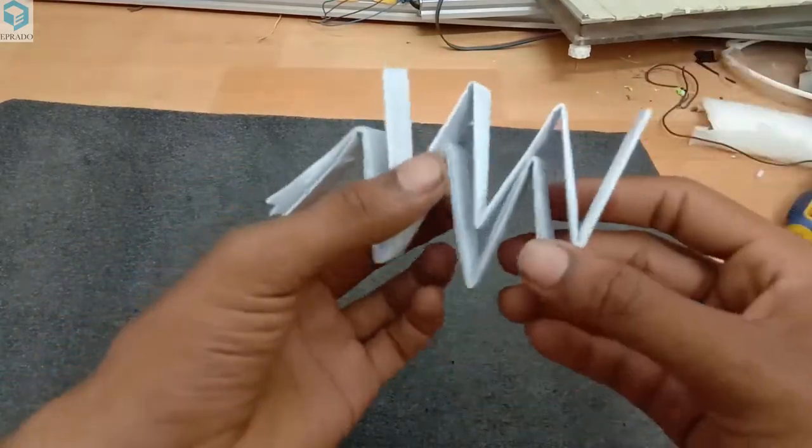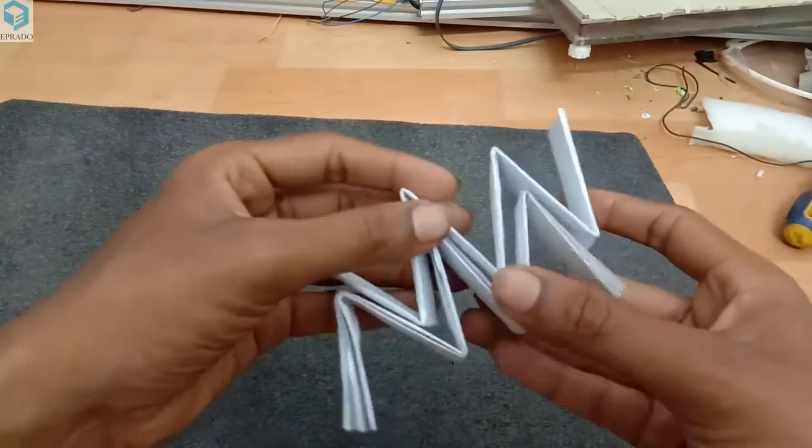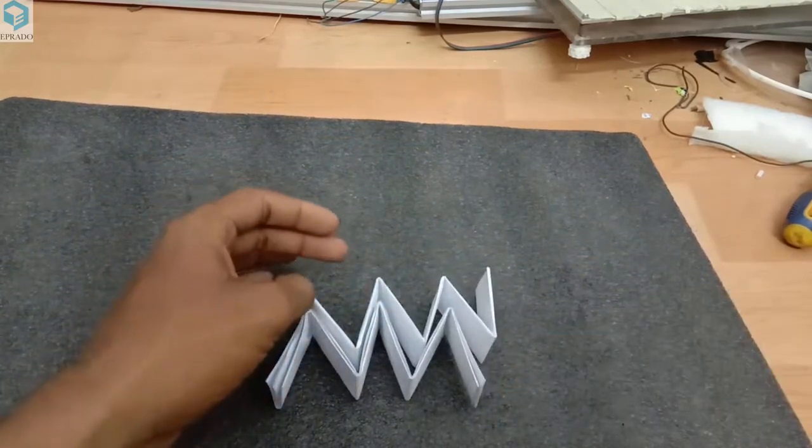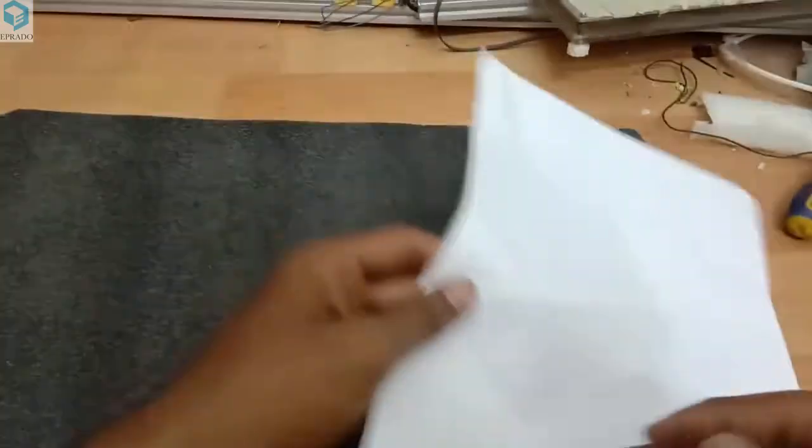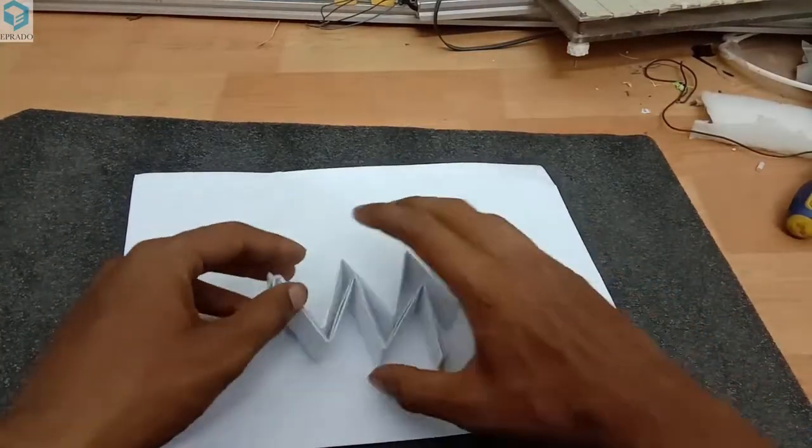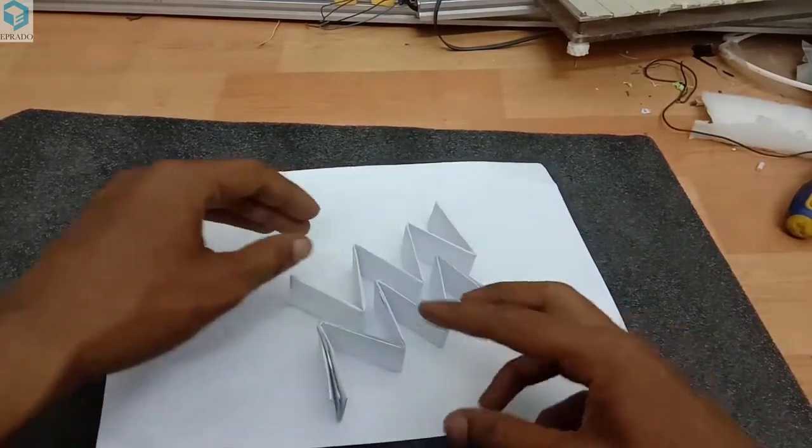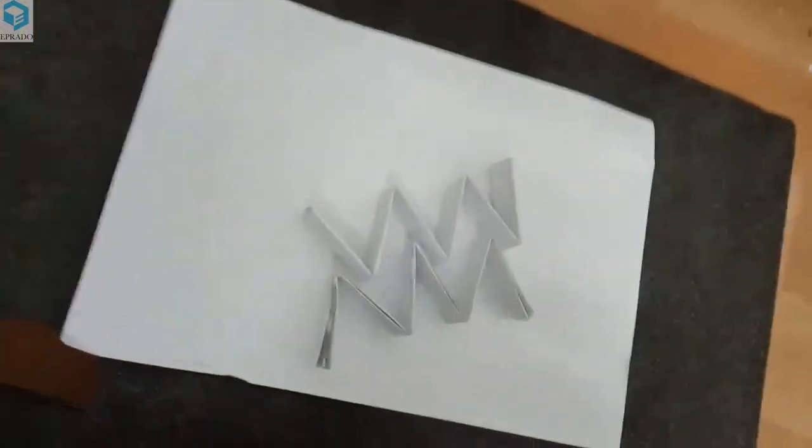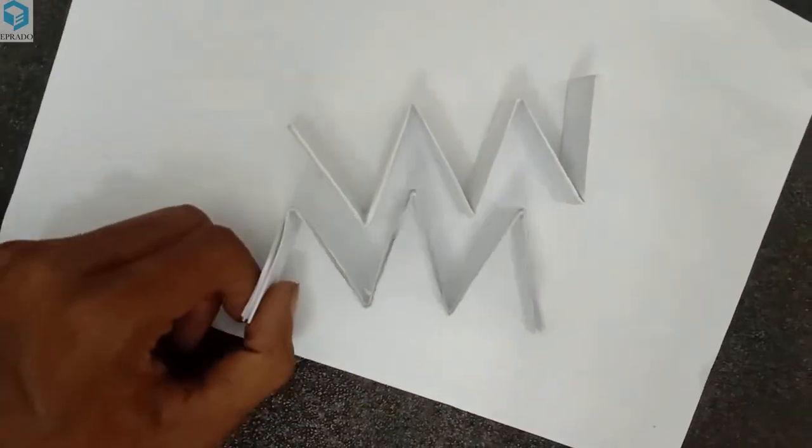What we are going to do is just insert one inside the other like this. Before that, we need a sheet of paper. Let's take another sheet of paper, just keep it as a base, and arrange these two sheets and fix it to the base. You can see it's like the shape of a resistor.